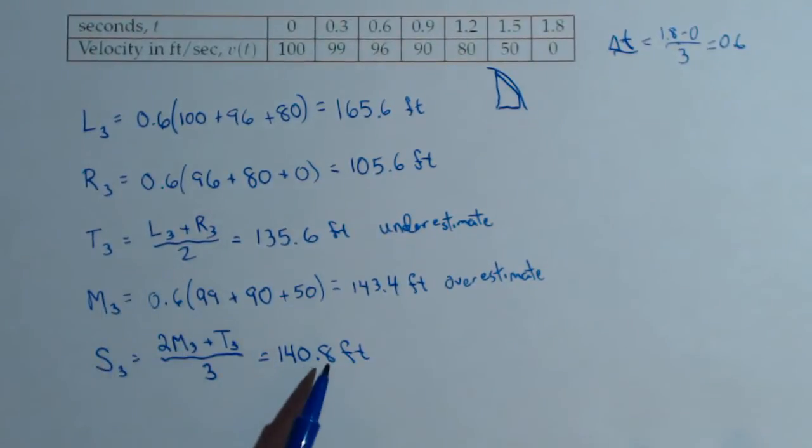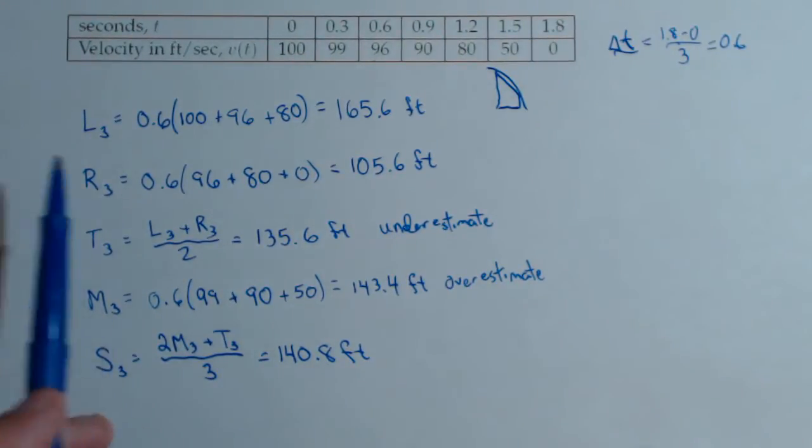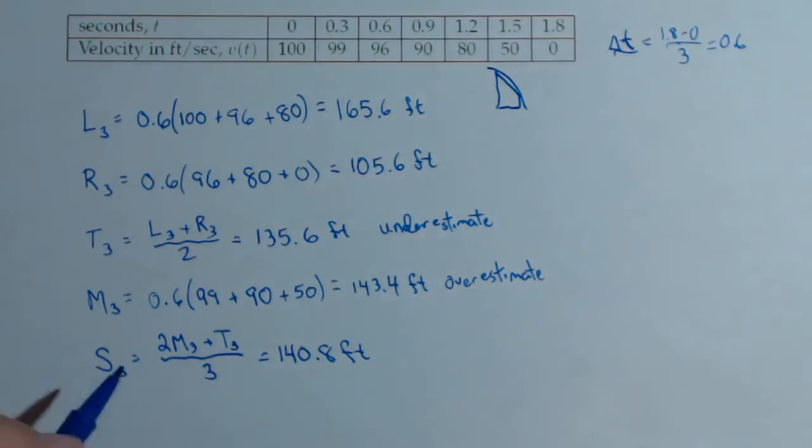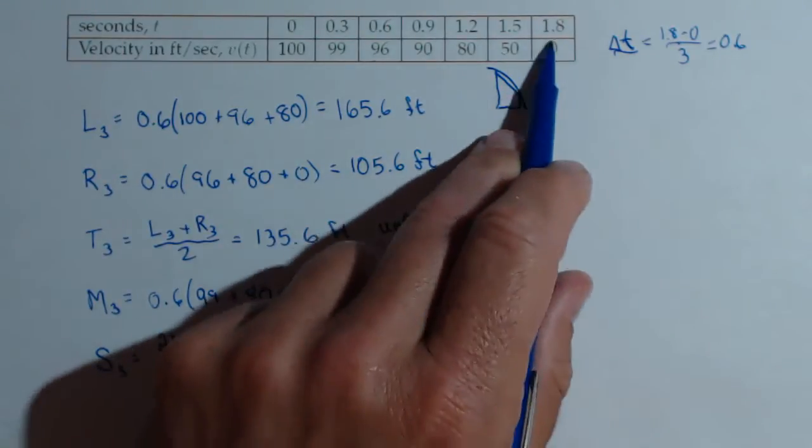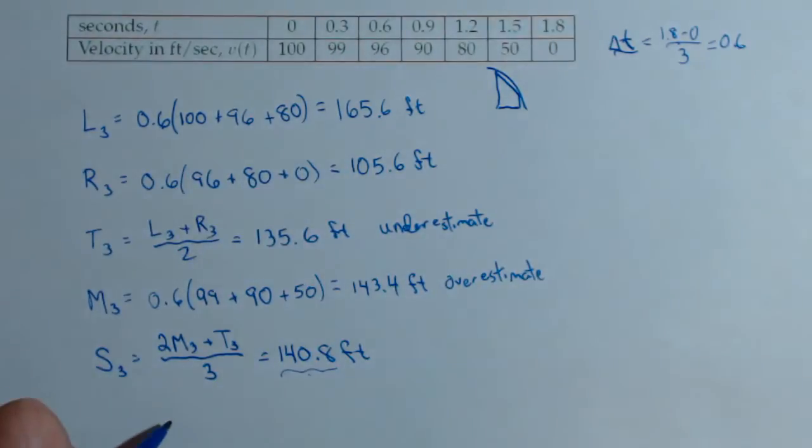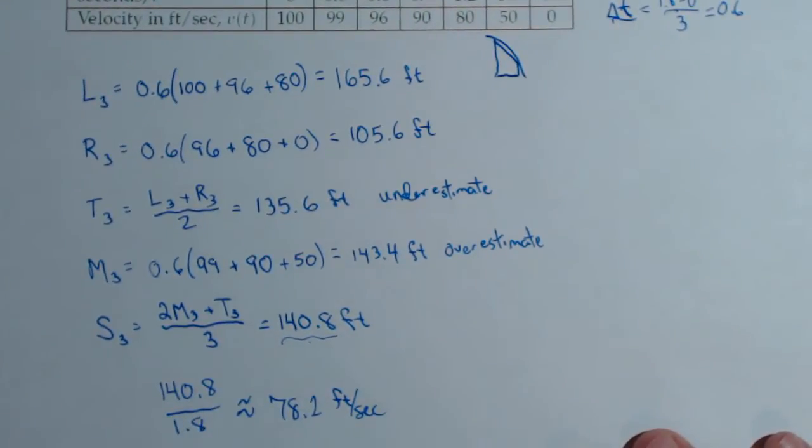Once we have the total distance traveled, we can get the average velocity over this interval. Remember, average velocity is our change in distance, which we just calculated, divided by our change in time, which was 1.8 seconds. So our average velocity is 140.8 over 1.8, which comes out to be approximately 78.2 feet per second. So that was the average velocity of this object during this time interval.